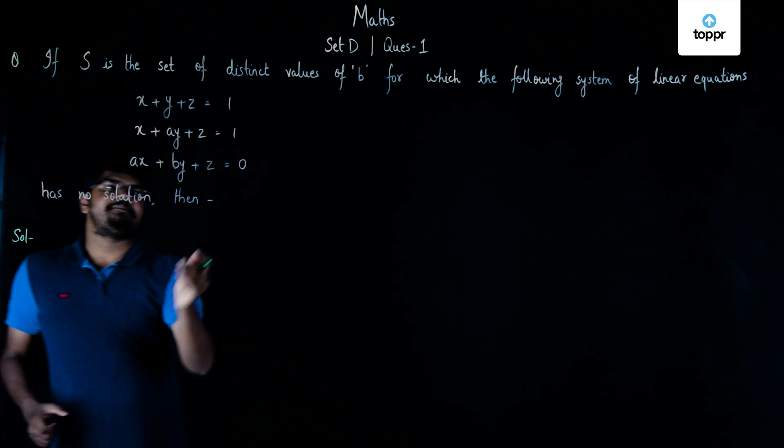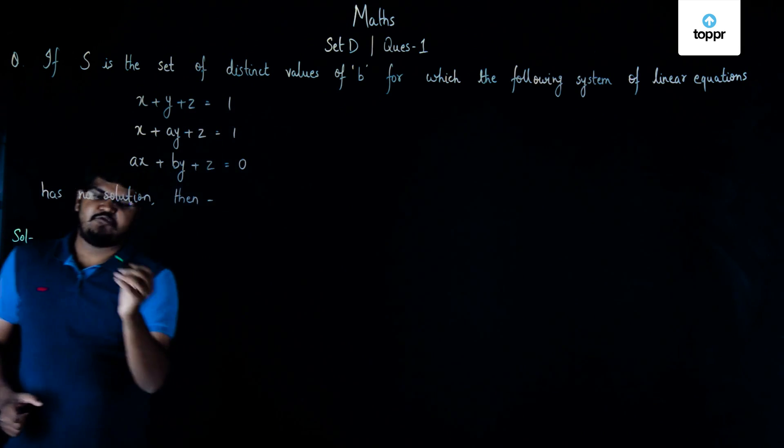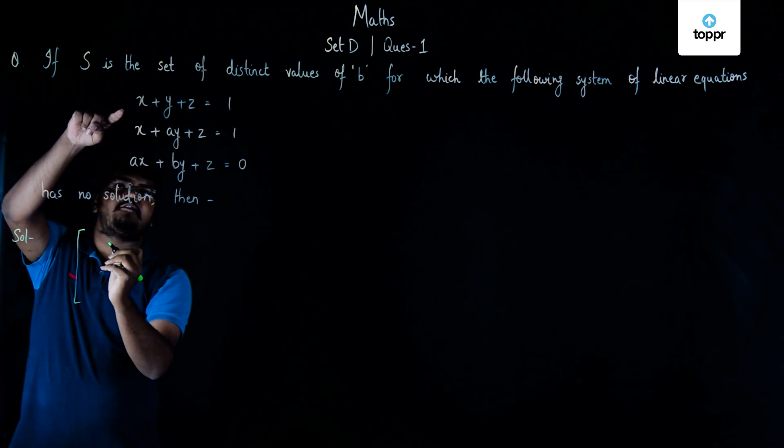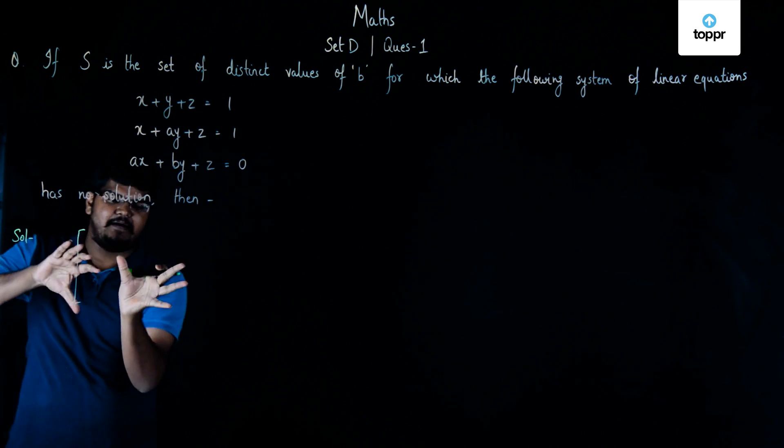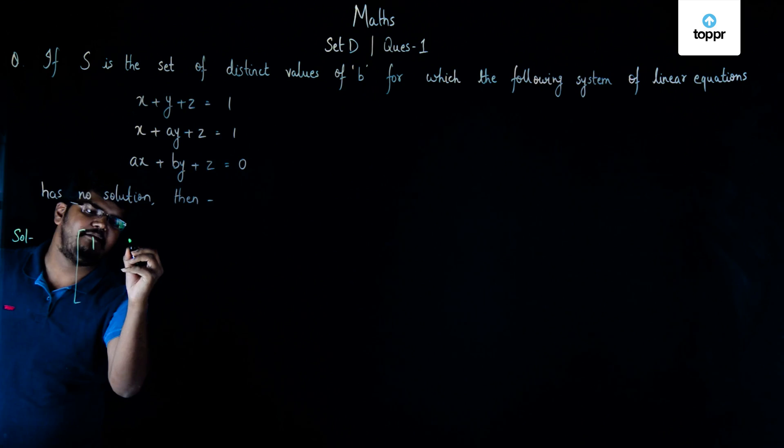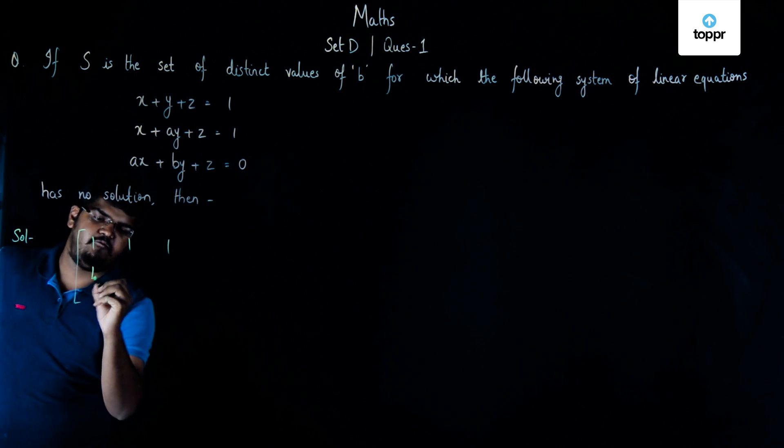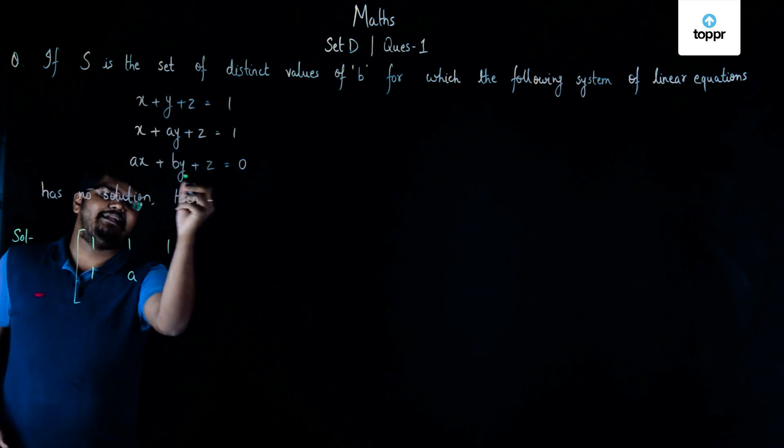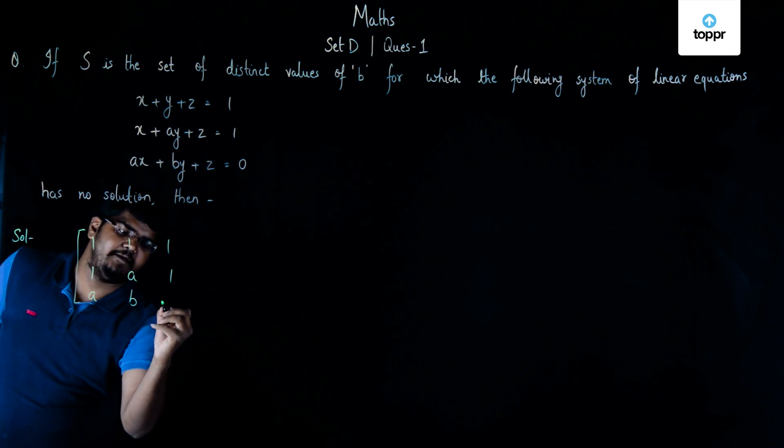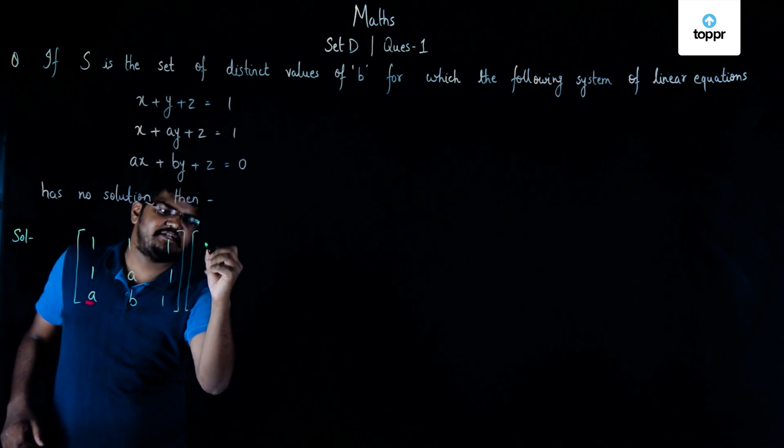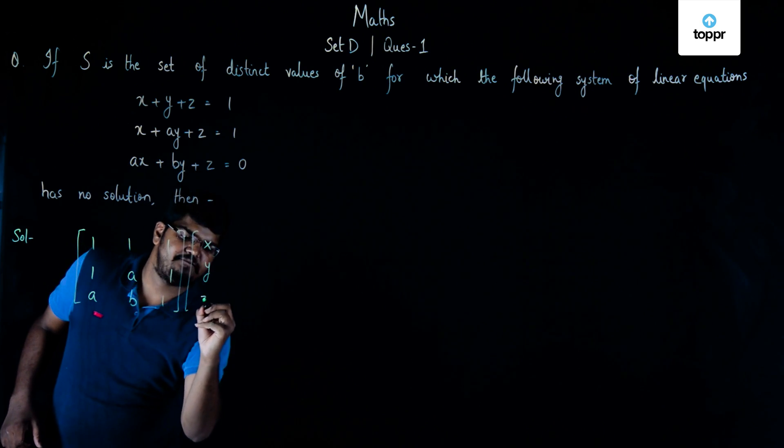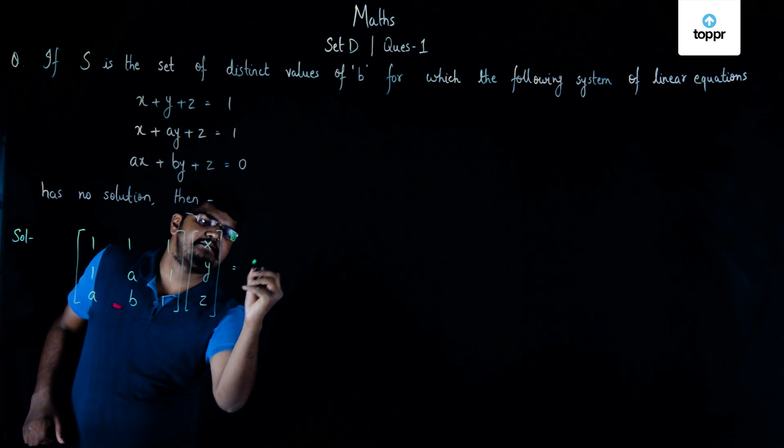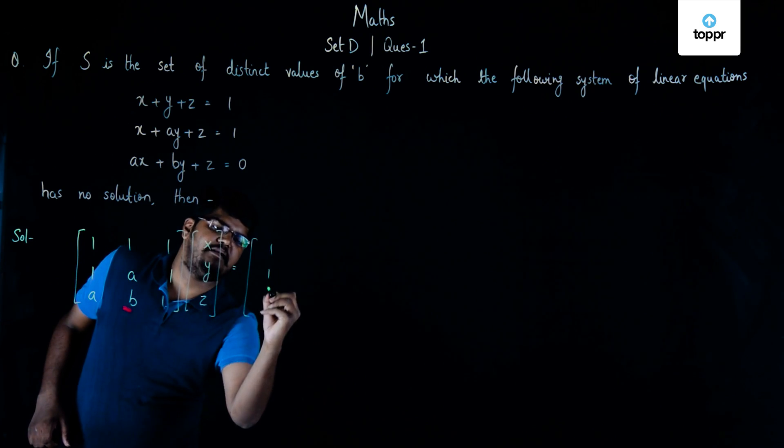We can always represent this particular system of linear equations in matrix form. The coefficients of x, y and z will come in this matrix. So it will be 1, 1, 1, 1, A, 1 and A, B, 1. This matrix when multiplied with the matrix of x, y, z gives us the result as 1, 1, 0.